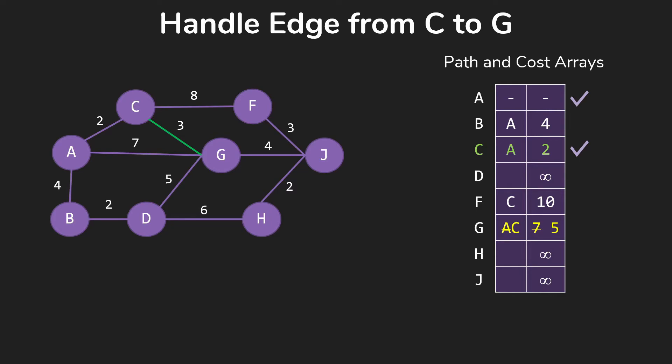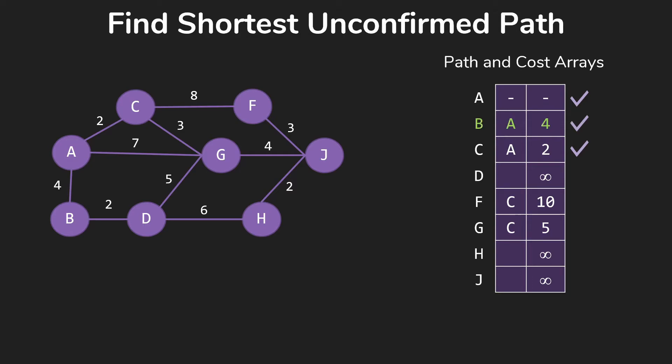That's better. So we're going to replace the cost with 5 and replace the A with C. That was all our edges out of C, so now we check our loop conditions. We're not done yet.